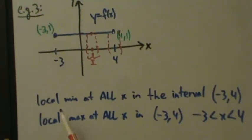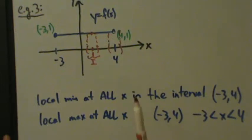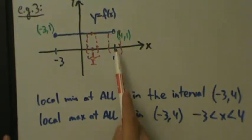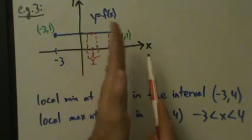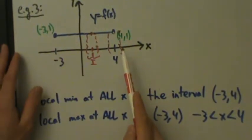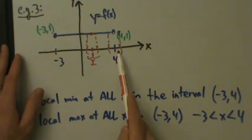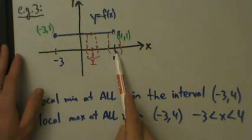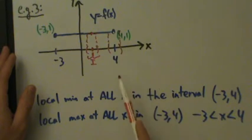So the definition for local min and local max can be satisfied for any x less than 4 and also greater than negative 3, but not at the endpoints. Because if you're directly at 4, any open interval you put around 4 will go off the function — the function is not defined to the right of 4, and any open interval around 4 has to go to the right, so there's nowhere to go on the function.